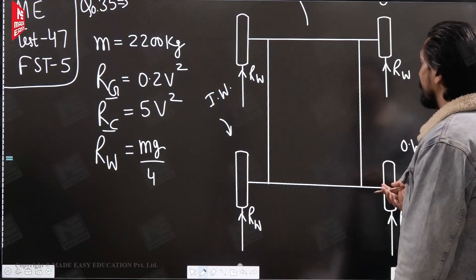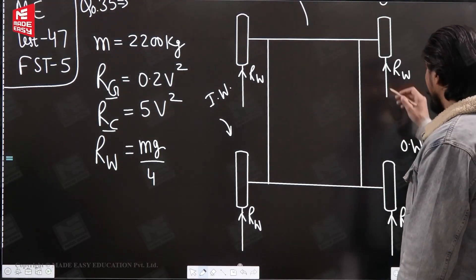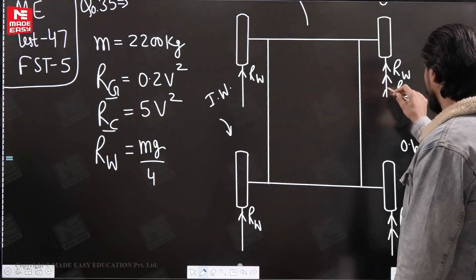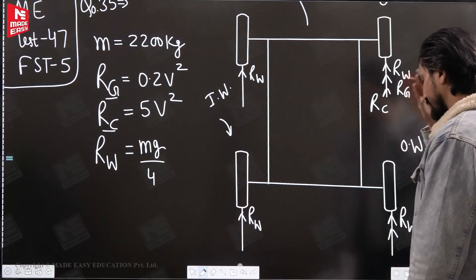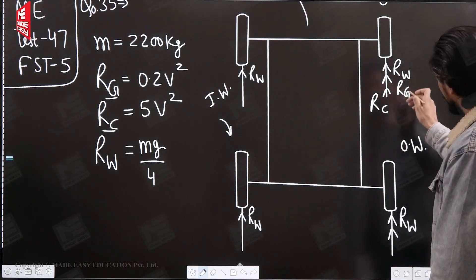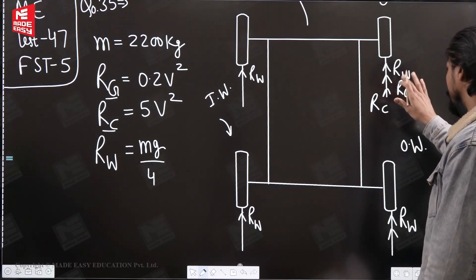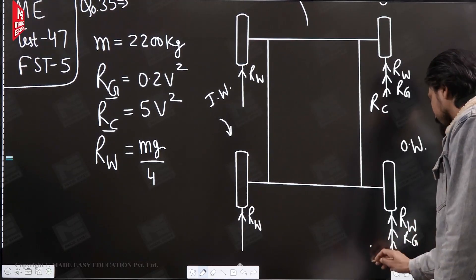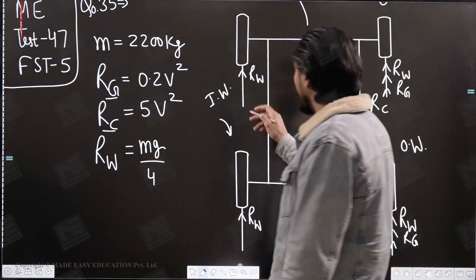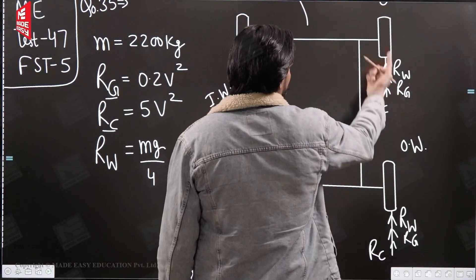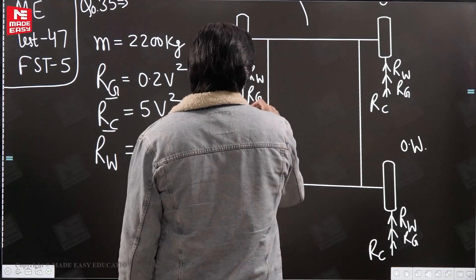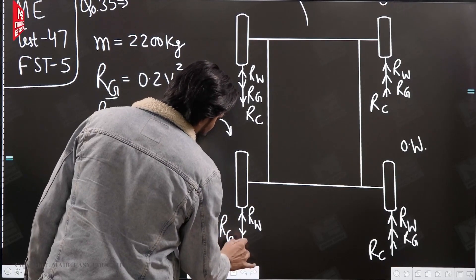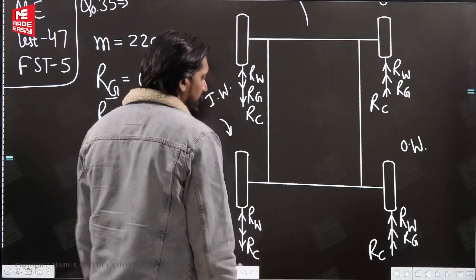The centrifugal effect reactions will be acting in the upward direction on the outer wheels — both Rg plus Rc acting upward. On the inner wheels, they will be acting in the downward direction. Since Rg is upward on the outer wheel, it will be downward on the inner wheel, and the same for the centrifugal effect reaction Rc.